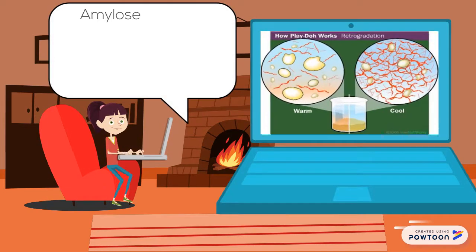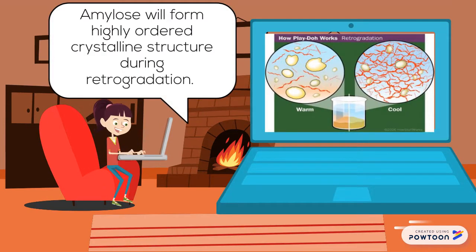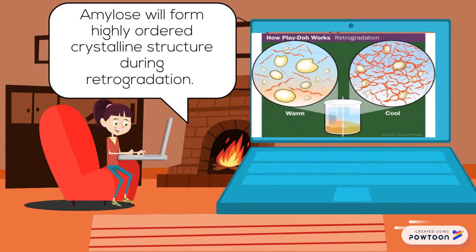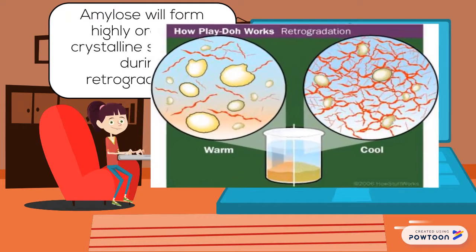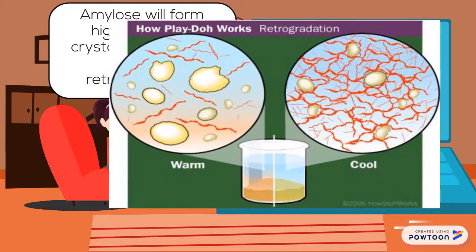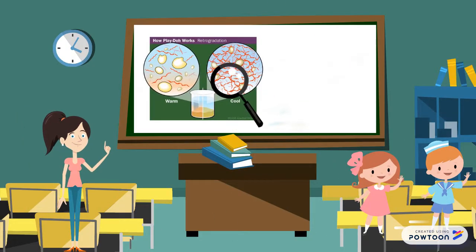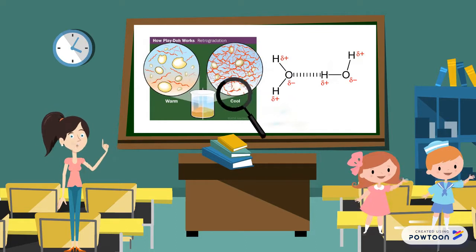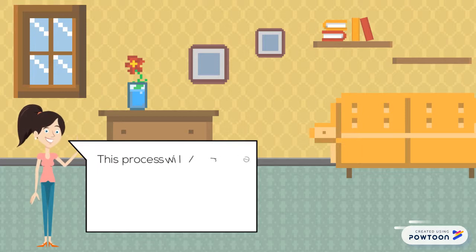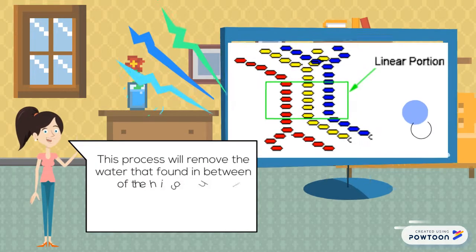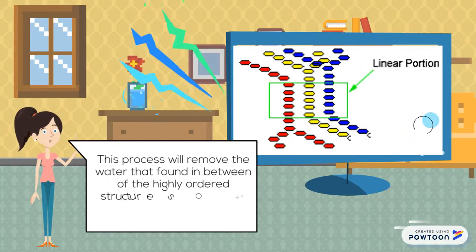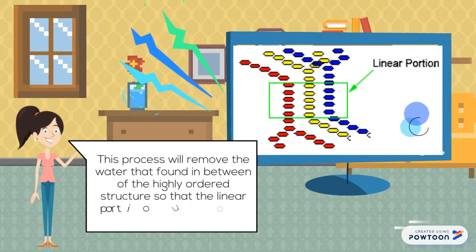Upon cooling and storage, retrogradation will take place and the amylose that leached out from the granules will line up to form a highly ordered crystalline structure. They form the crystalline region by joining together through hydrogen bonding. This process will remove the water that forms between the highly ordered structure so that the linear portion of the amylose can crystallize.